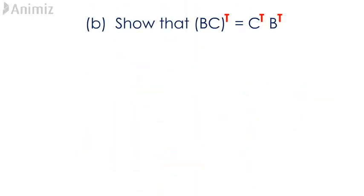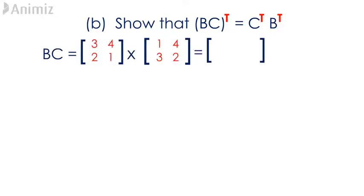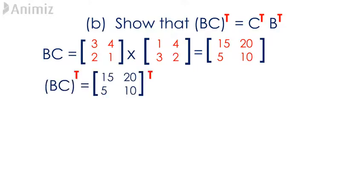Question B. Show that the transpose of BC is equal to C transpose times B transpose. In order to find the transpose of BC, multiply matrix B and C together. The outcome obtained is a 2 by 2 matrix containing the elements 15, 20, 5, 10. This matrix is now transposed by interchanging its rows and columns to get the transpose of BC, which is 15, 5, 20, 10.